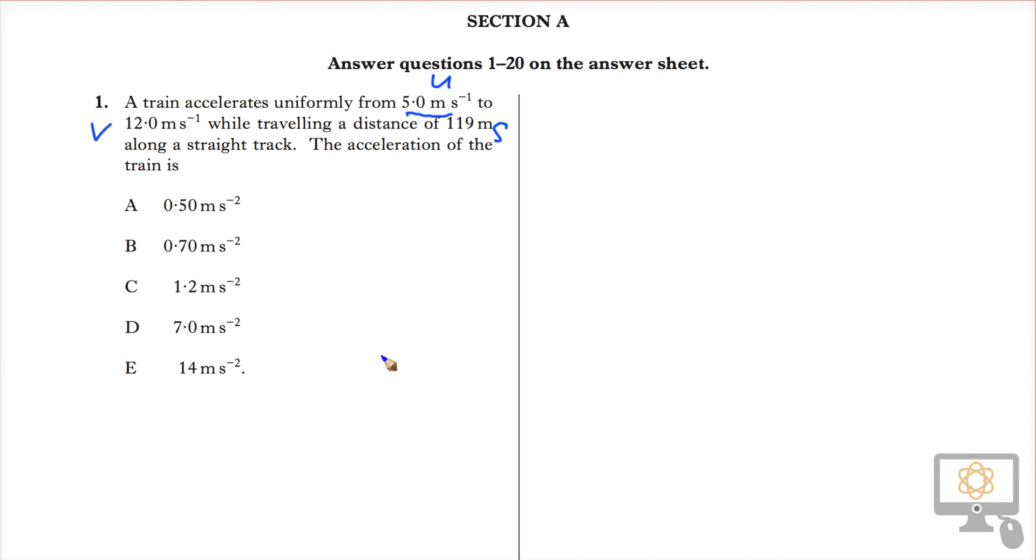We need a formula which links u, v, s, and a. Our equation of motion which does that is v squared equals u squared plus 2as.